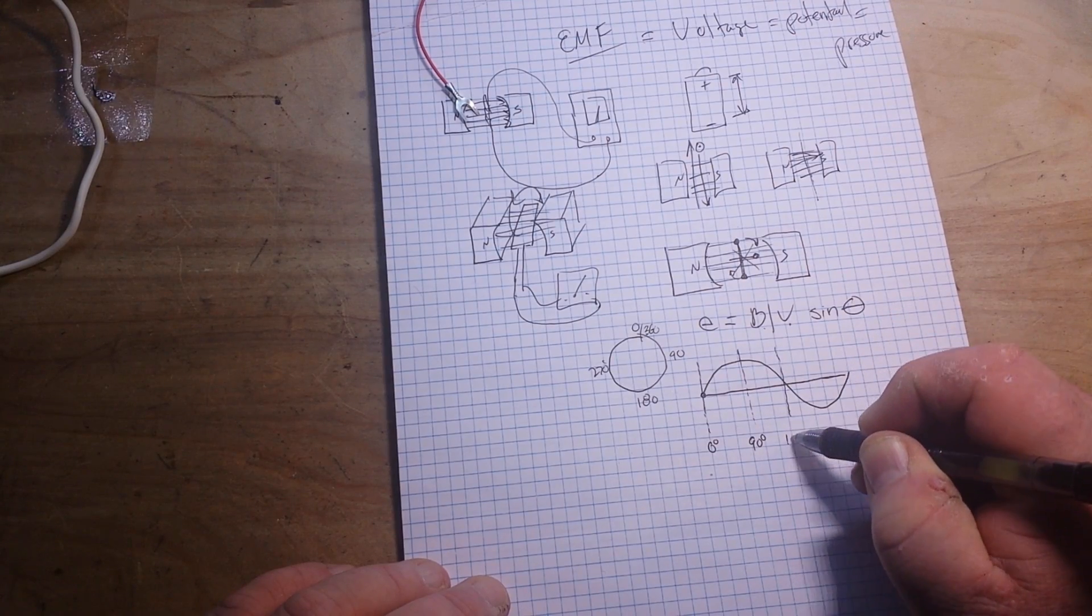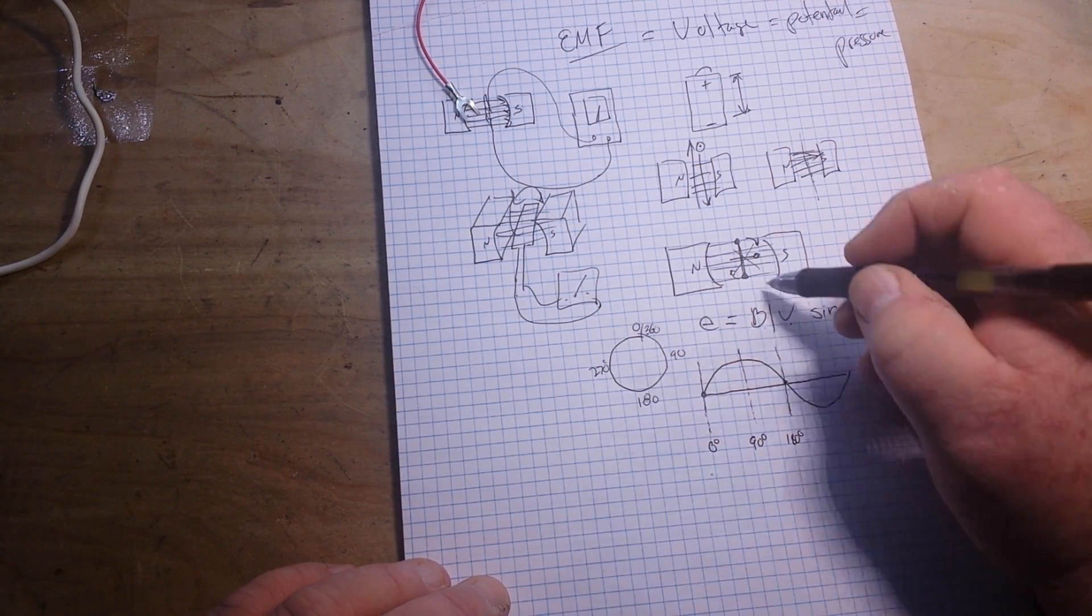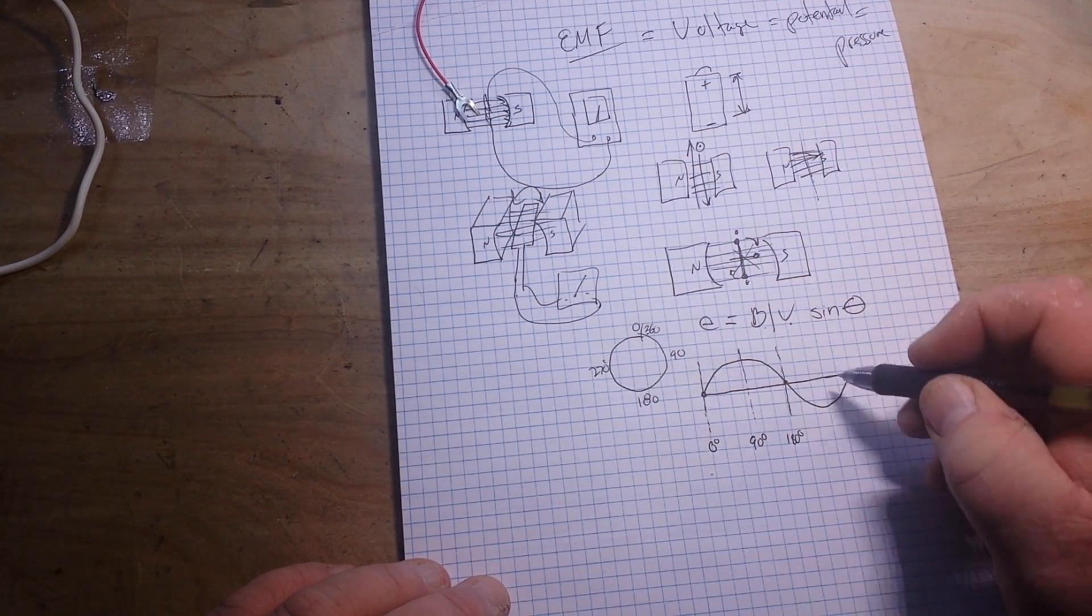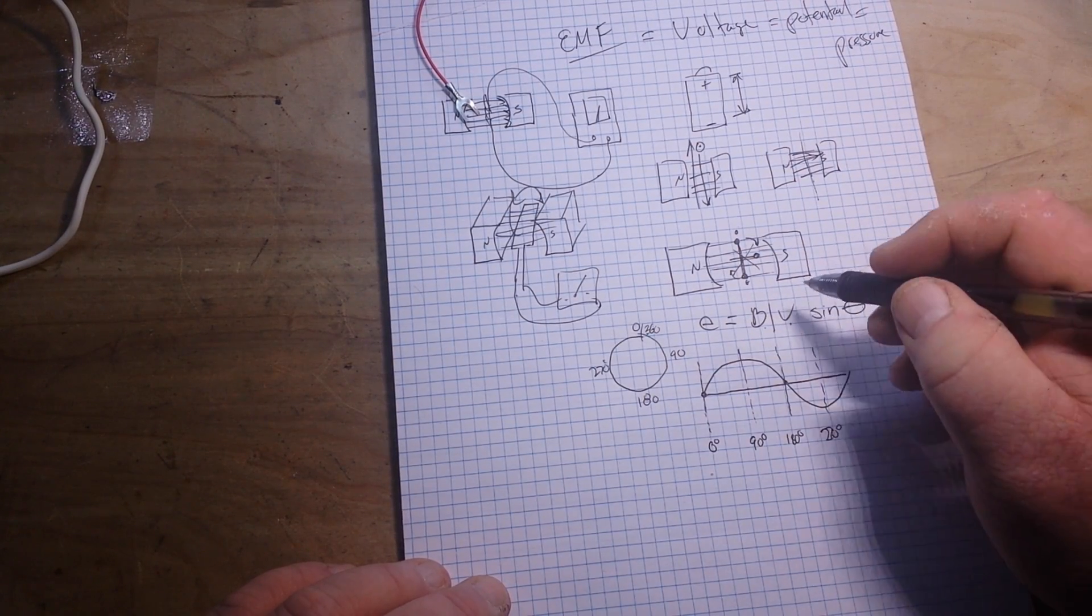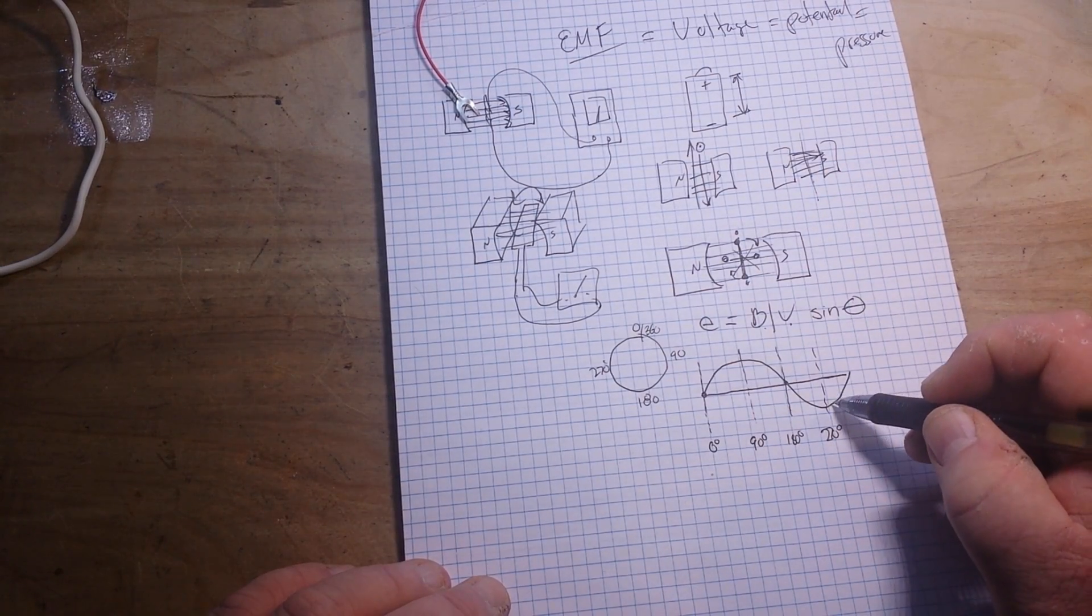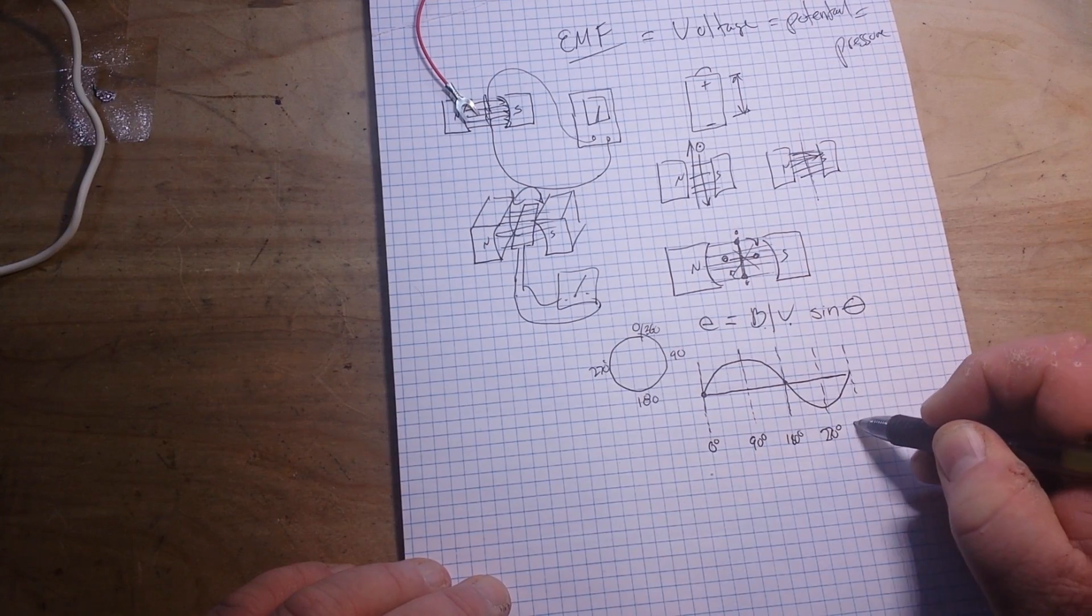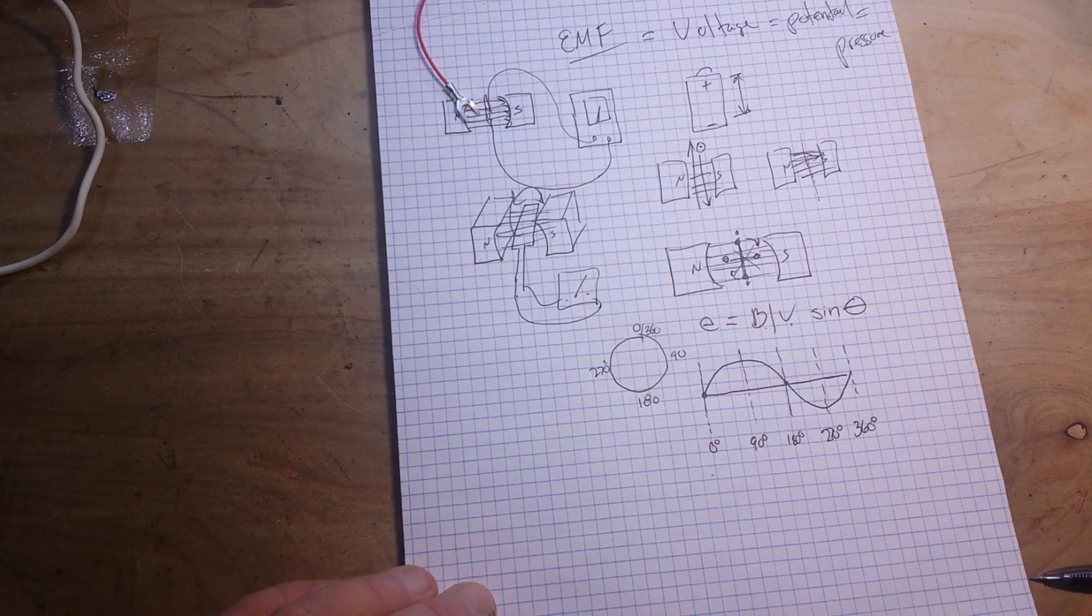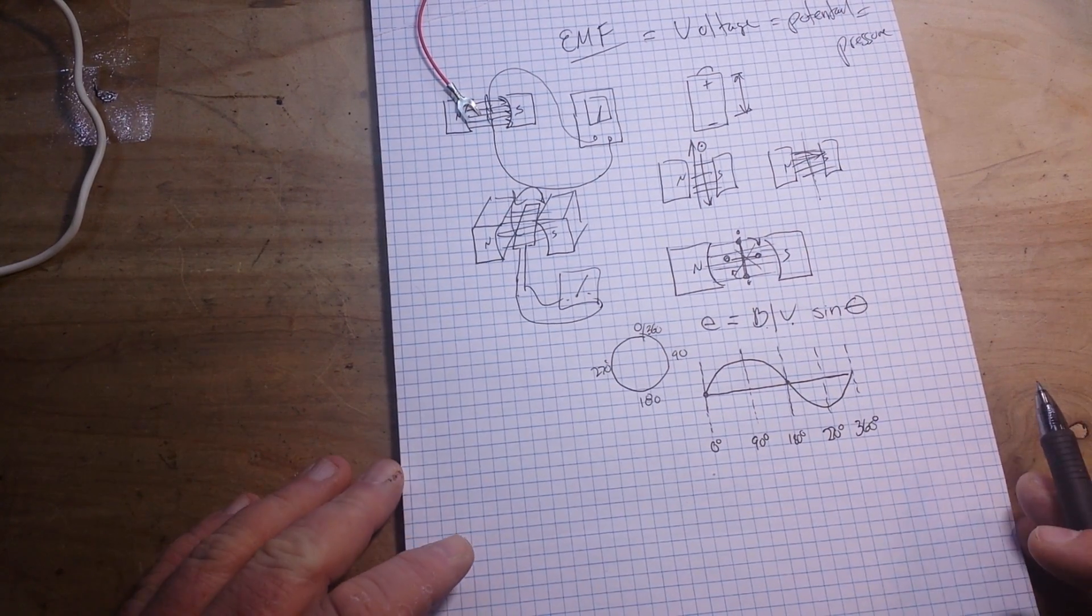When we get here to 180 degrees, we are again at the 0 point. As this part of the conductor here is now down here, it is simply switched directions. Then when we get to 270 degrees, this conductor is now over here and is again cutting the most lines of magnetic force. And finally, when we get to 360 degrees, we are back to where we started in cutting the least number of lines, therefore the least amount of magnetic force.